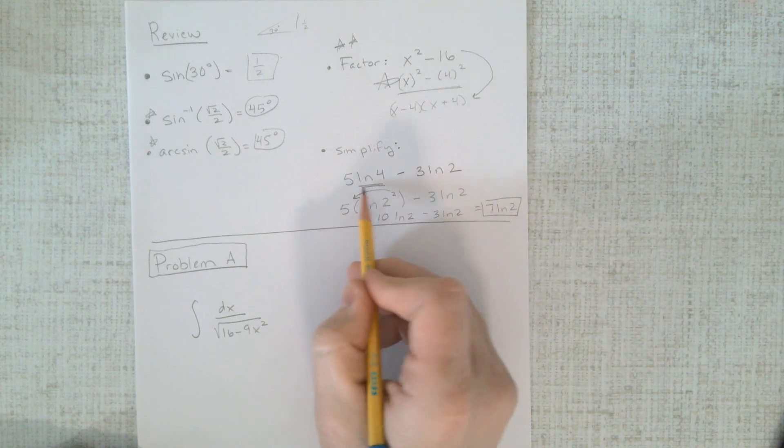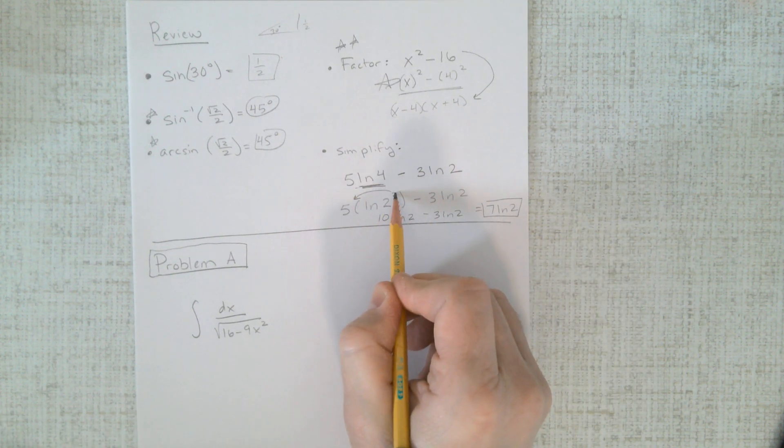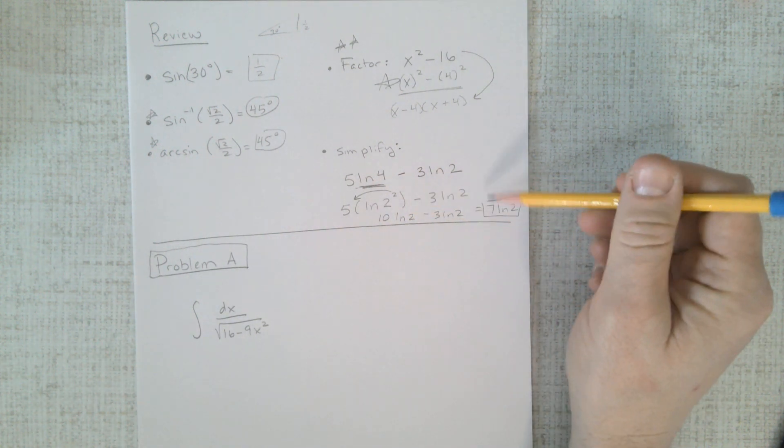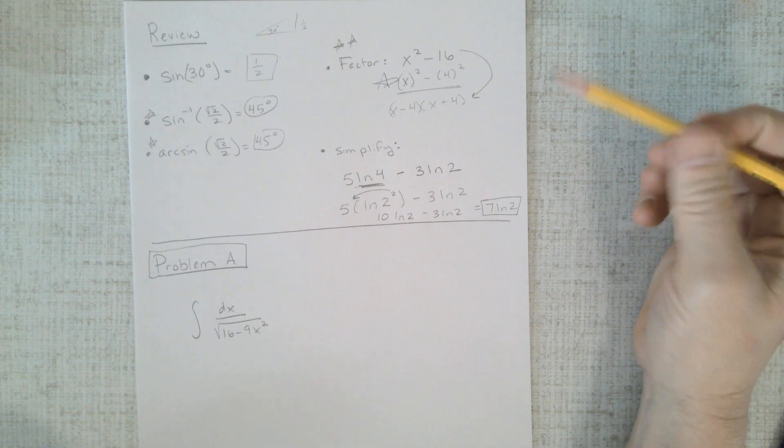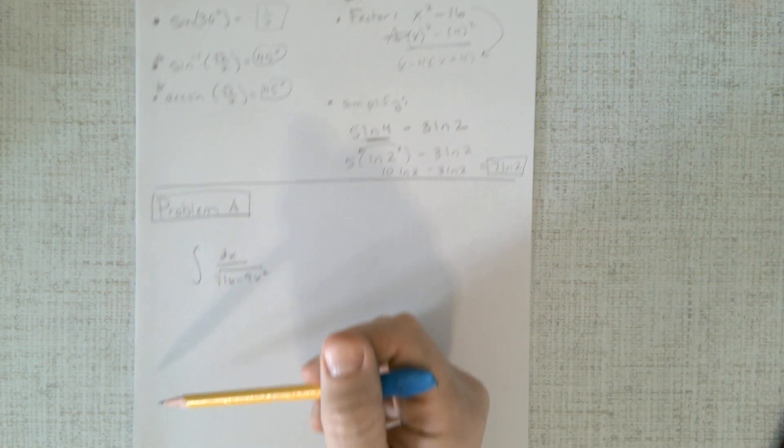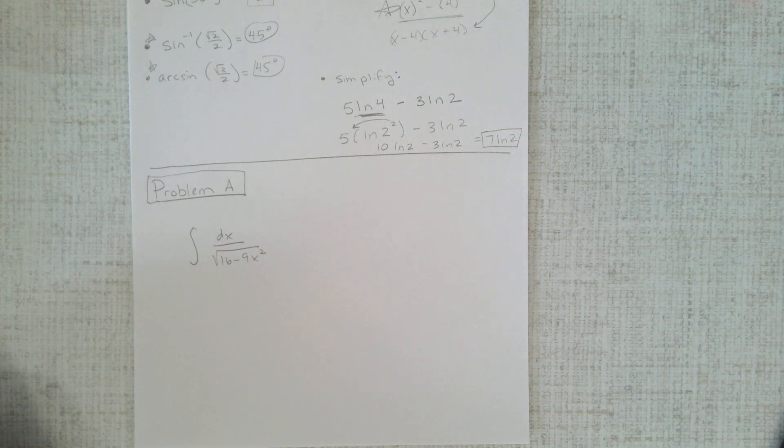So whenever you're simplifying logs, look for powers. If there's powers inside your log, they can always be simplified out. So always do that, or else you're not going to get a simplified answer. And it's going to be hard to match up some of the homework answers if you're not simplifying them. All right, problem A. Here we go.